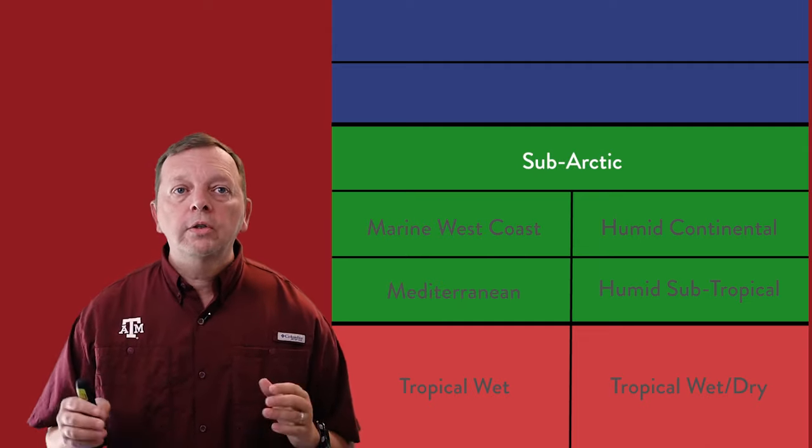So those are the 12 major climate types of the Earth. This also concludes our last lesson on the essentials of physical geography. In our next lesson, we're going to start putting people on the ground and start talking about human geography. But until then, keep on learning.